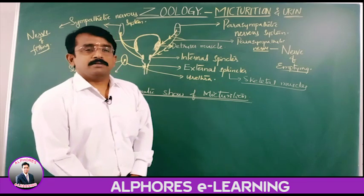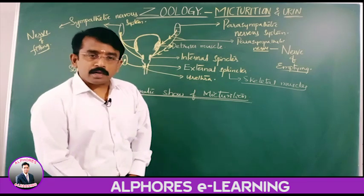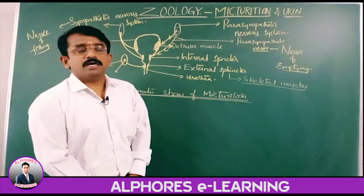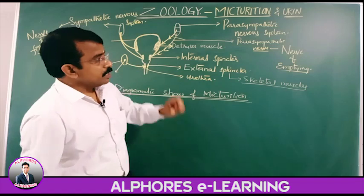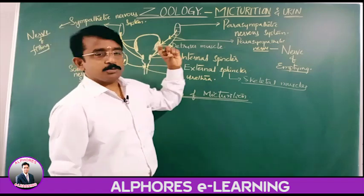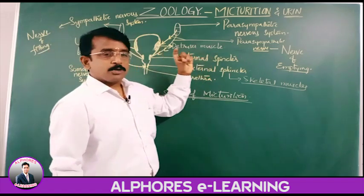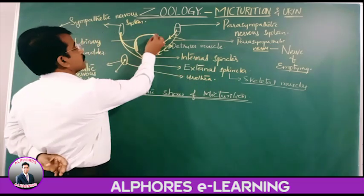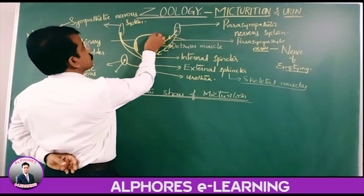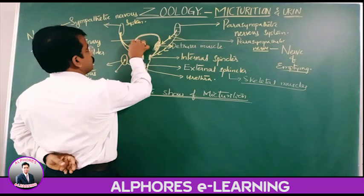From the minor calyces to major calyces, then into the renal pelvis, renal pelvis into ureter, and ureter into the urinary bladder.